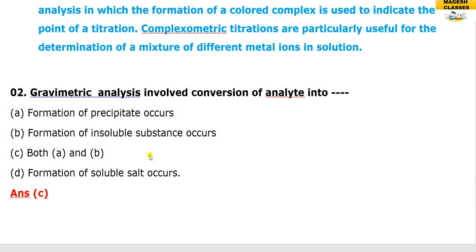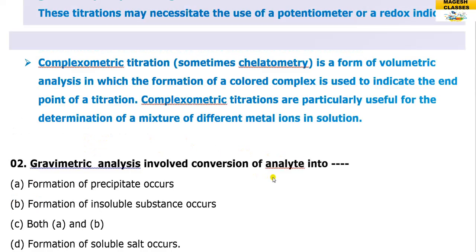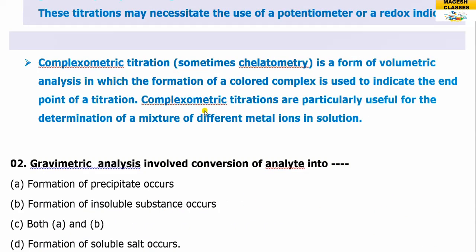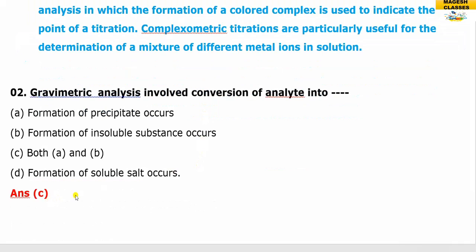Question two: gravimetric analysis involves conversion of the analyte. The analyte cannot be directly measured; it must be converted. When precipitation occurs, the formation of an insoluble substance takes place. The constituent is converted into a substance — either a precipitate or an insoluble substance of known composition. So the answer is C.